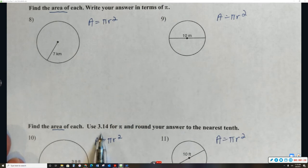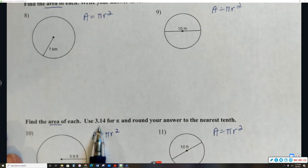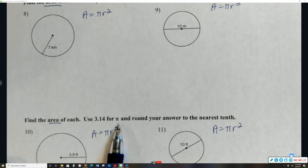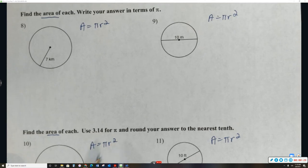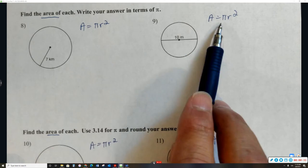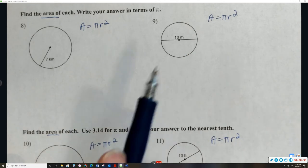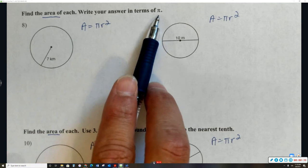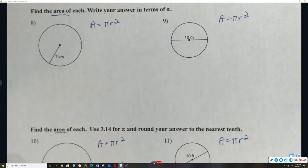And then for 10 and 11, if you can see down here, they're asking us to use 3.14 instead of pi. You see I have the formula already written 4 times because it's the same area formula. The only difference is on these ones up here, we're not going to replace pi with 3.14, and then the ones down here we are.